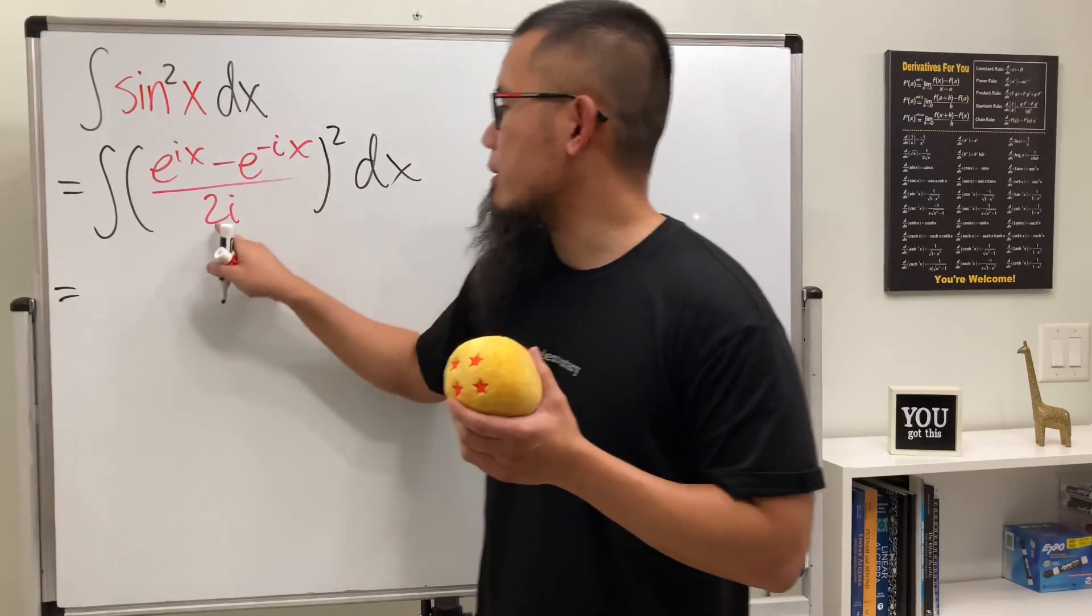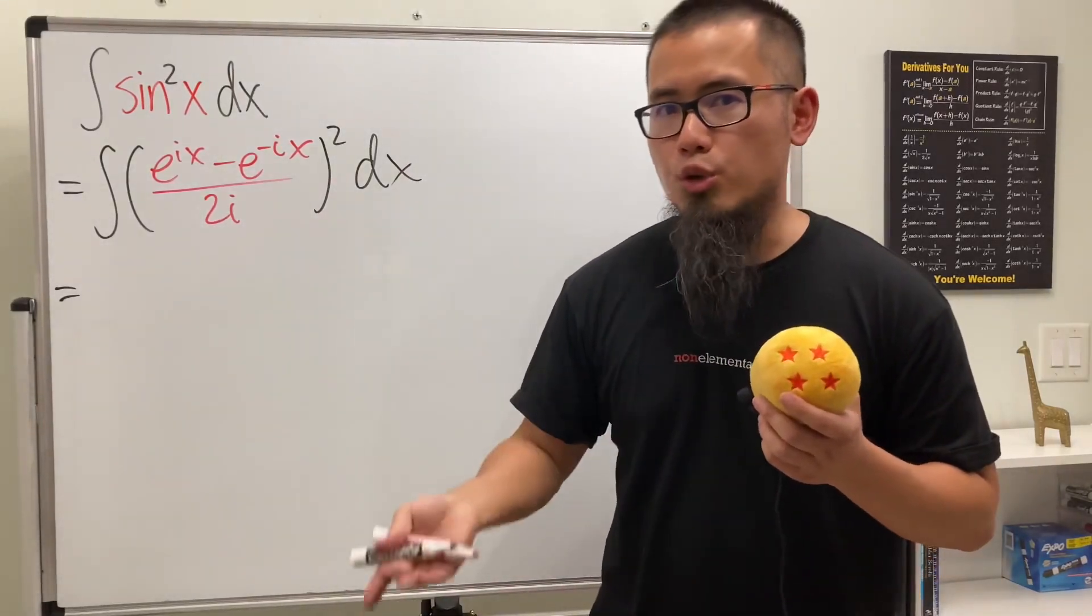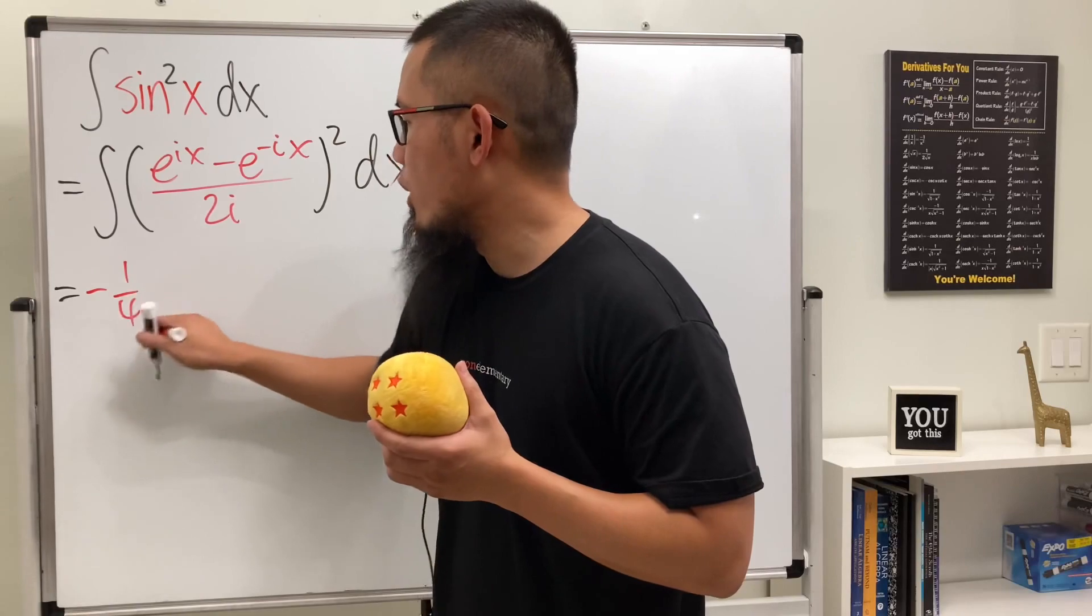And then right here, go ahead and do the bottom. 2i squared is going to be 4i squared, which is going to be negative 4 on the bottom, so we can write it as negative 1 over 4 all the way in the front.